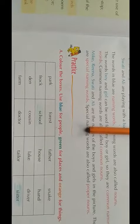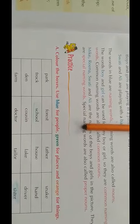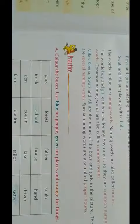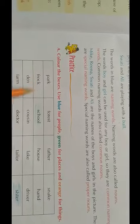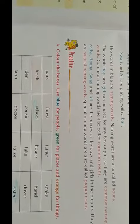Likewise, you have to find out all the places in the box and color them with green. Thirdly, we will take orange color and color the things. We will find out the things here. For example, frog — we will color it orange. Likewise, you have to find out all the examples of things and color them all. Exercise B exercise.